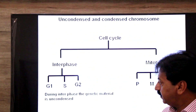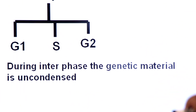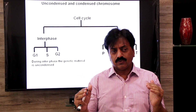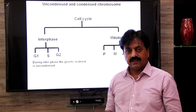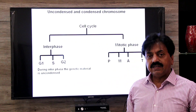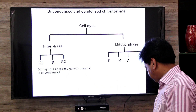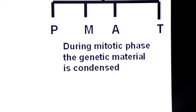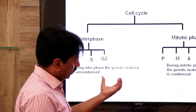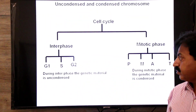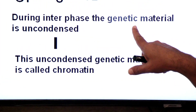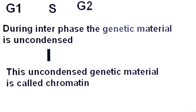During interphase, the genetic material is uncondensed — the DNA is more or less open. This uncondensed genetic material is called chromatin.